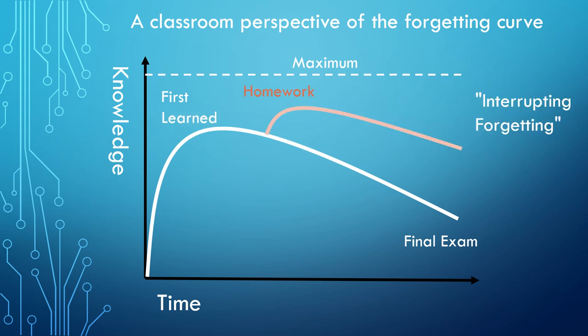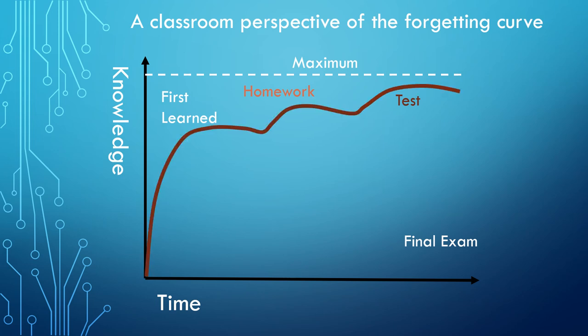But by carefully adding in spaced retrieval practice such as homework, we can alter the forgetting curve by interrupting the forgetting. And likewise with a test, we introduce a space to when we start studying for our test and our revision acts as an additional point of retrieval practice. And again, we're interrupting forgetting.